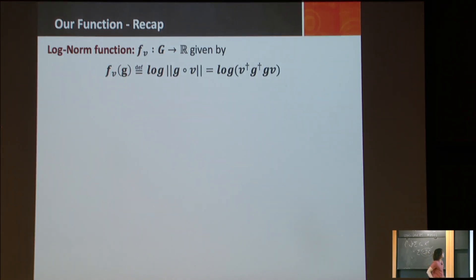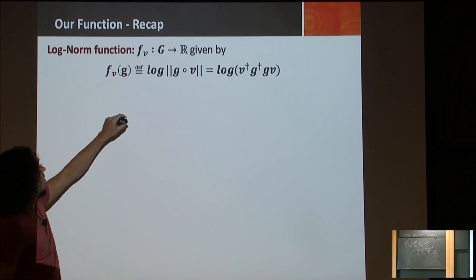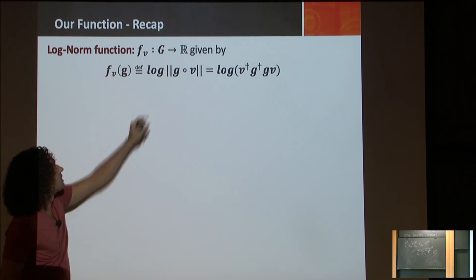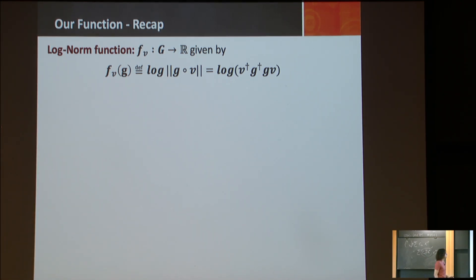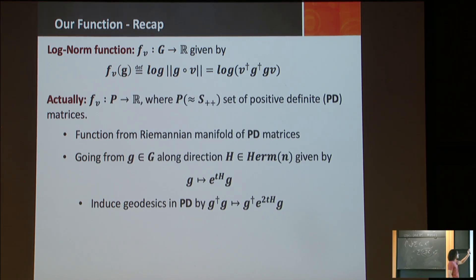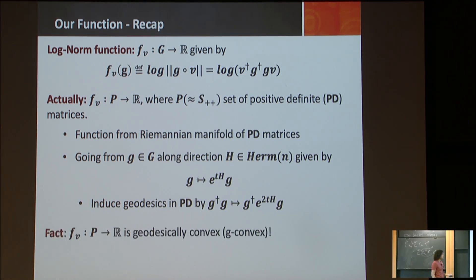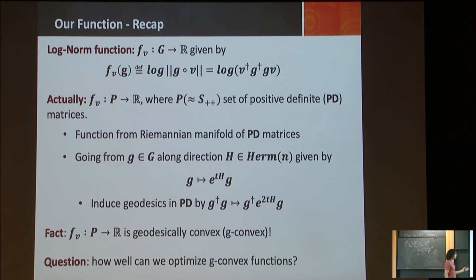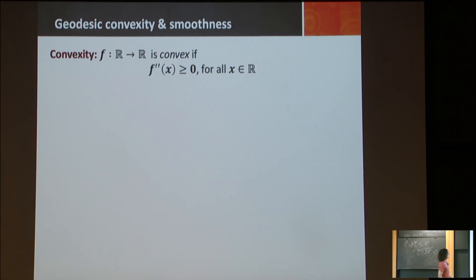Now let's talk about our results and algorithms — first and second order methods: gradient descent and a second-order Newton method. We'll describe the main parameters governing these algorithms and see examples in the commutative case. We'll also discuss non-commutative duality and open questions. Our function is this log norm FV of G — the log of the norm of G·V — which can be seen as a function on positive definite matrices with nice geodesics.